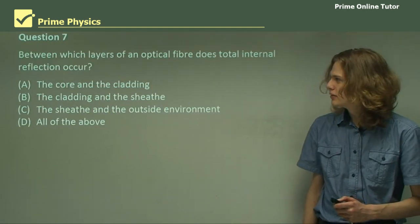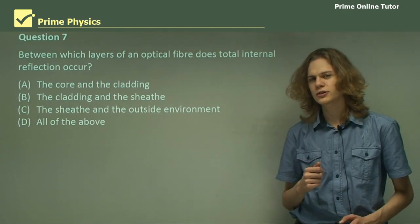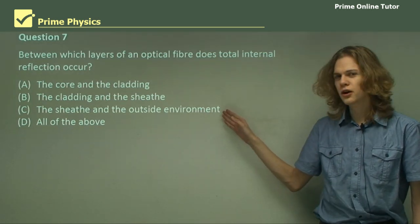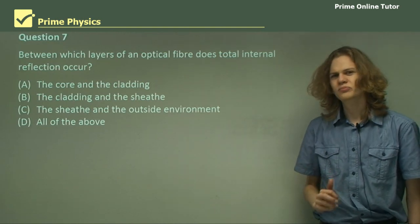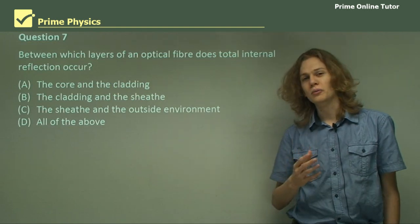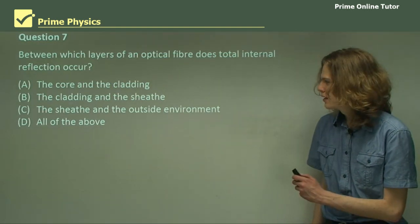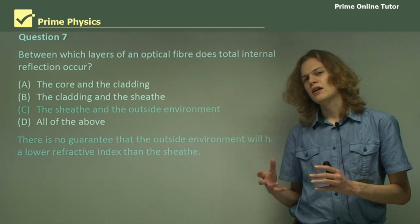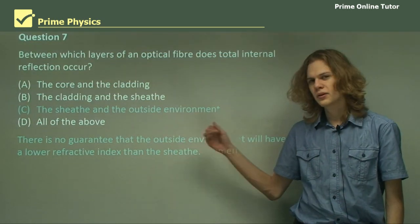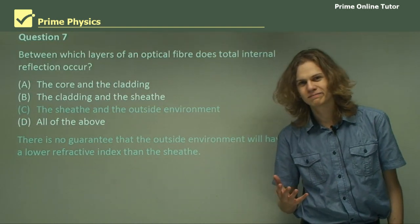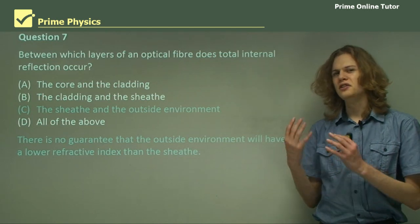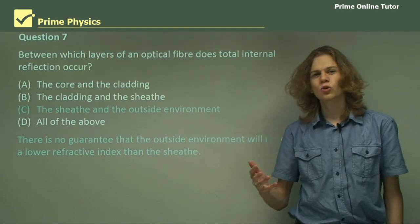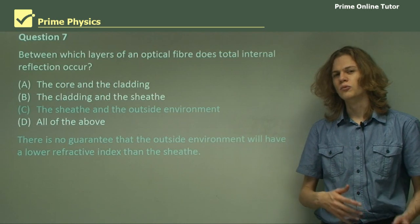Question 7. Between which layers of an optical fiber does total internal reflection occur? Is it the core and the cladding, the cladding and the sheath, the sheath and the outside environment, or all of the above? Now I'll give you a clue — it's not all of the above. If we were to say C, the sheath and the outside environment, it would mean that the outside environment must have a higher refractive index than the sheath. The problem is we can't guarantee that — supposing we're embedding an optical fiber inside diamond. Diamond has a very, very high refractive index, so it would be almost possible to get total internal reflection occurring in the sheath.